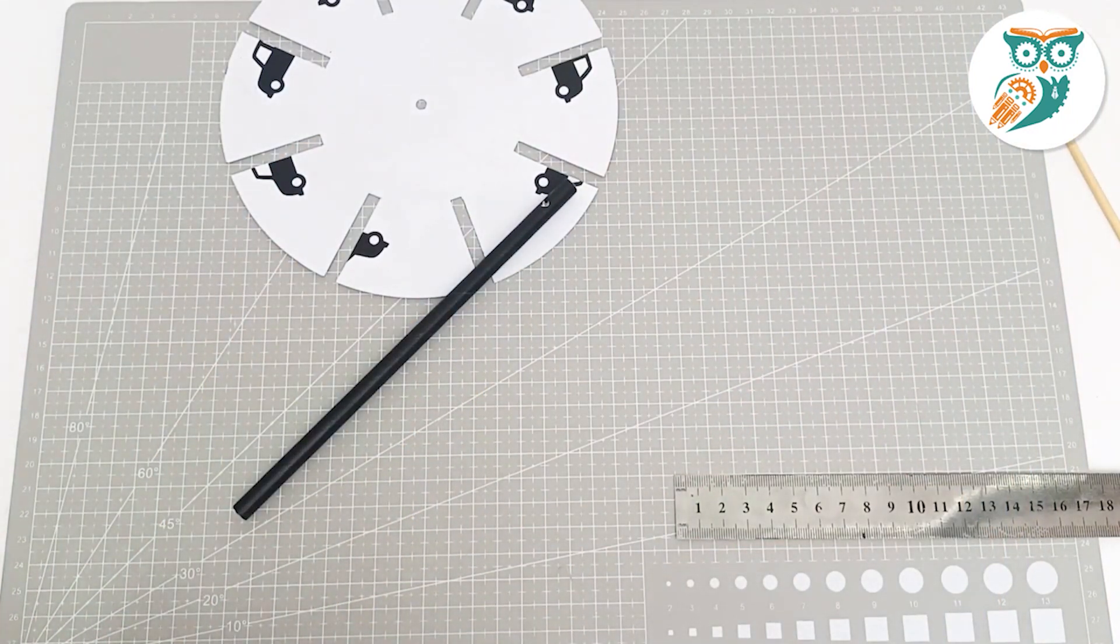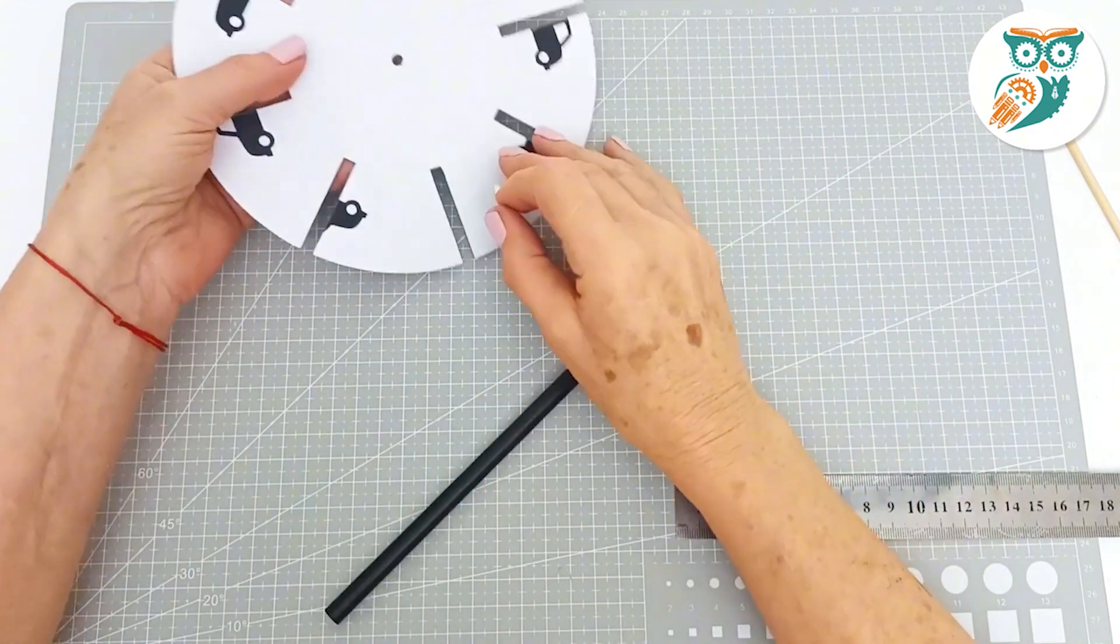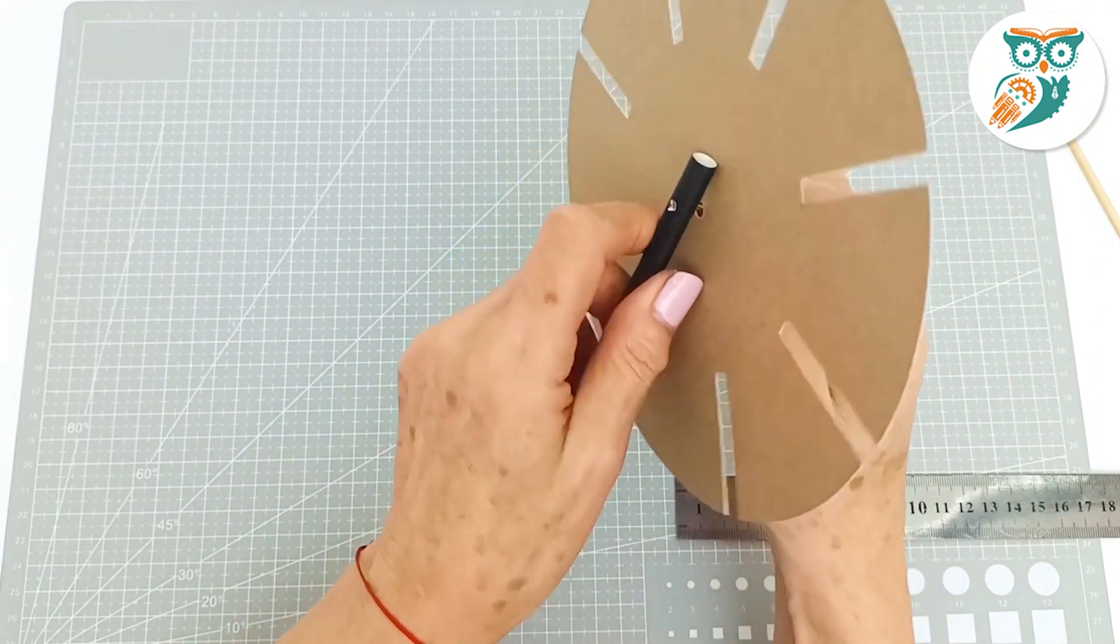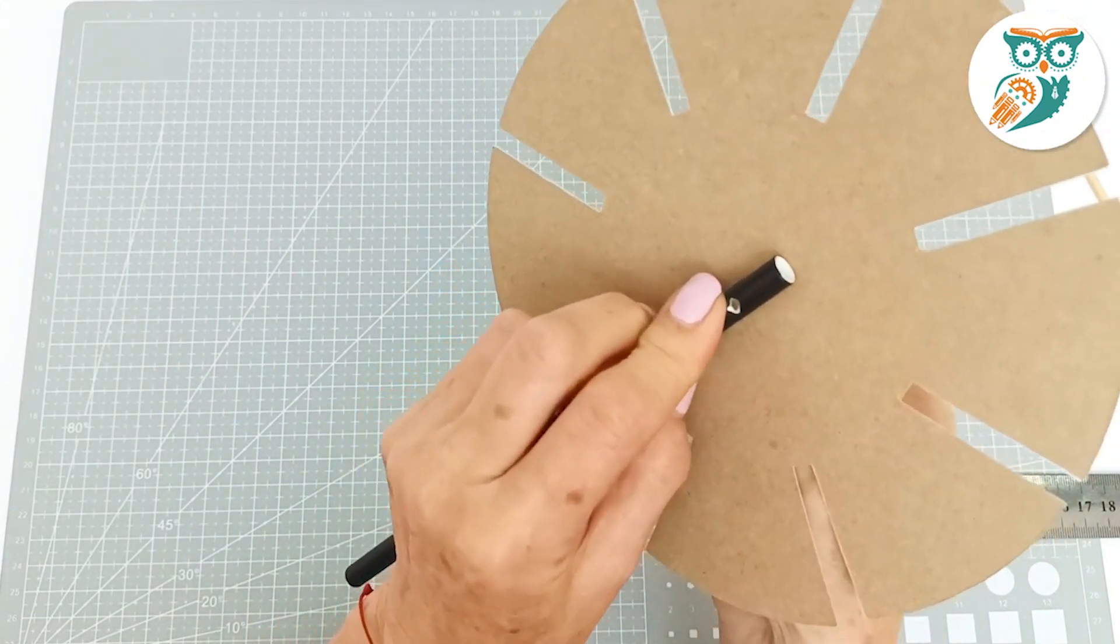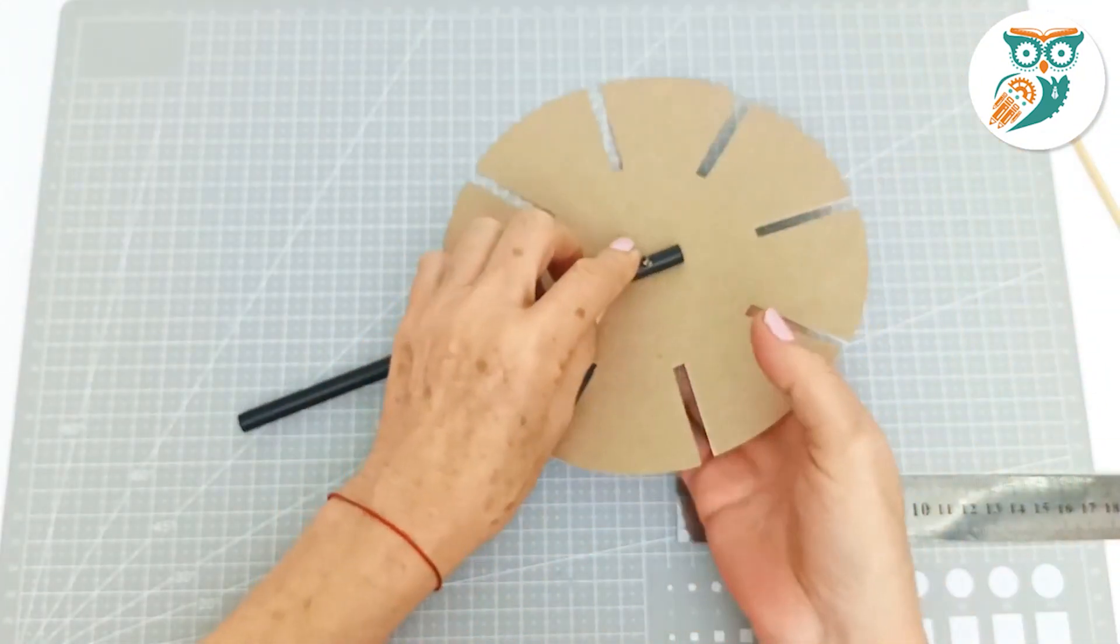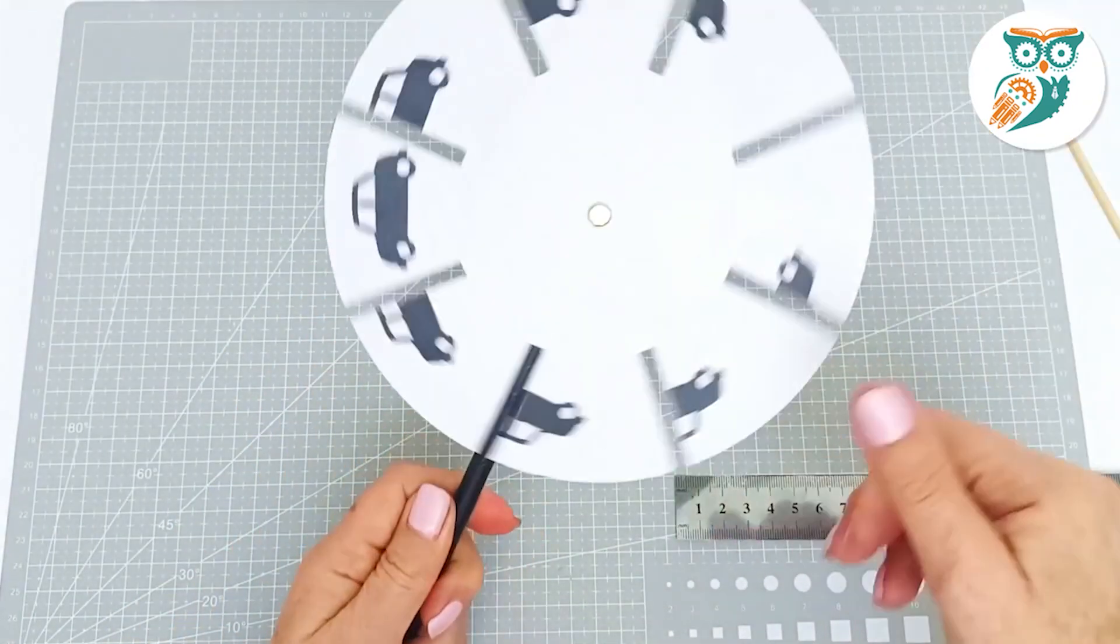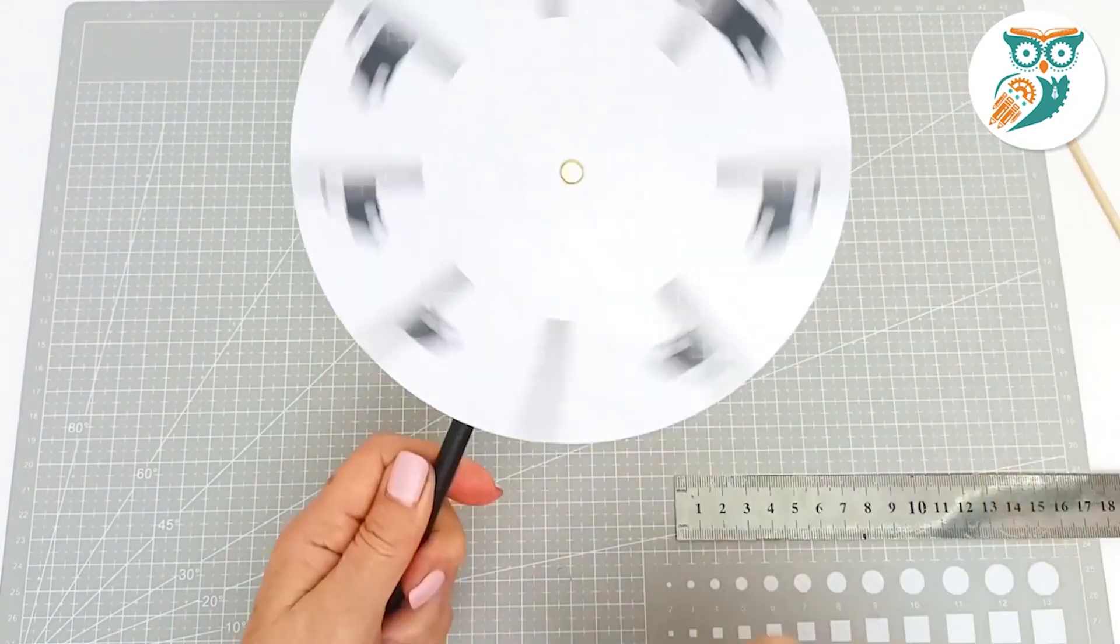And now we're going to grab a push pin and we're going to push it through our template, the cardboard and the straw, and then we're going to open those legs to secure it. Don't do it too tight. We want to make sure that it can spin freely. There we go. Perfect. Now it's ready to play with.